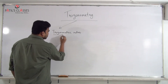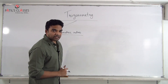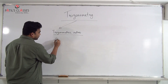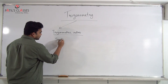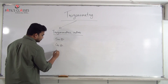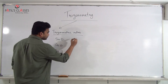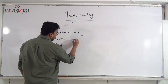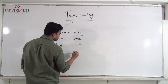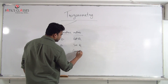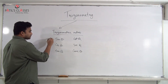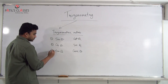How many trigonometric ratios are there? There are in total six trigonometric ratios: sin θ, cos θ, tan θ, cot θ, sec θ, and cosec θ. These are the six trigonometric ratios.